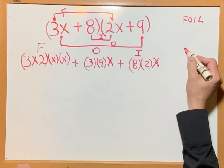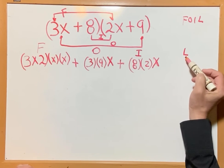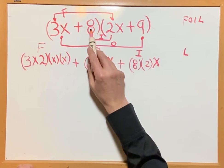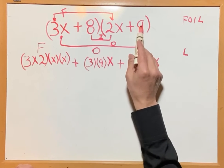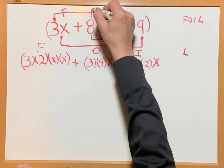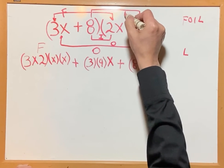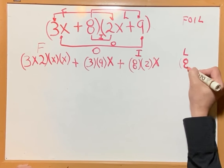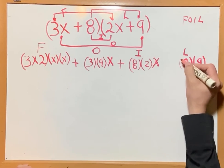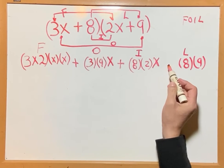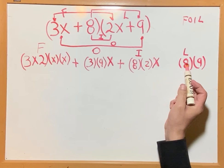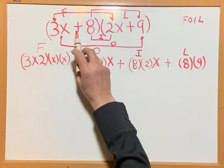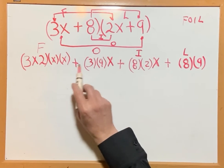And L is for the last term. That means the last term of one binomial times the last term of the other binomial. That's the product — 8 times 9. The sign is positive times positive, so it's going to be positive.